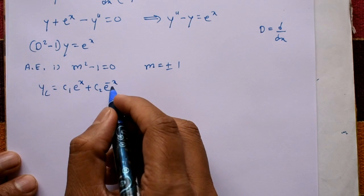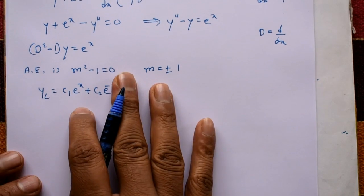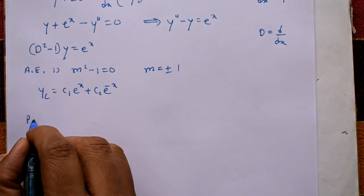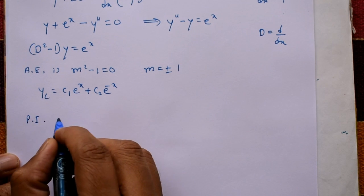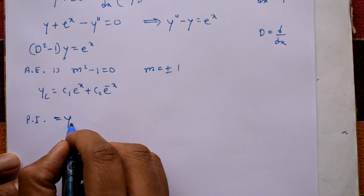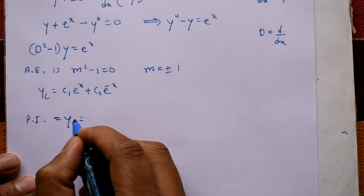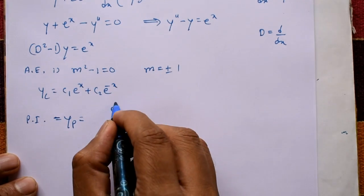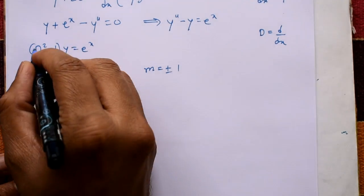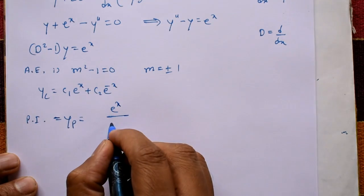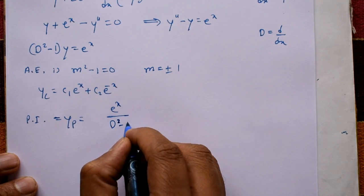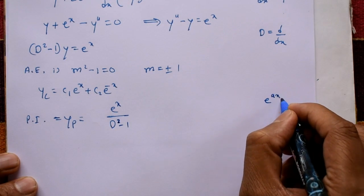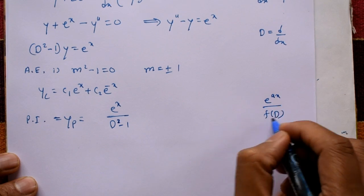The complementary function is complete. Now for the particular integral yₚ: the formula gives eˣ divided by f(D), where f(D) is D² - 1. We put D equal to a, which is 1 here.